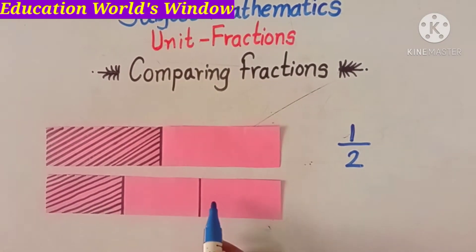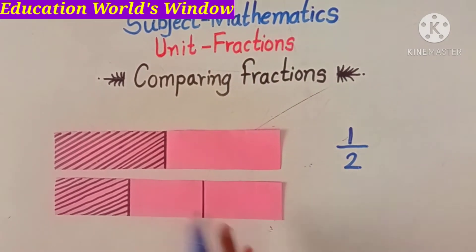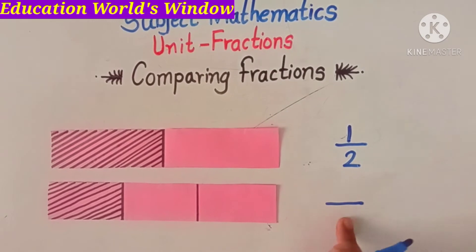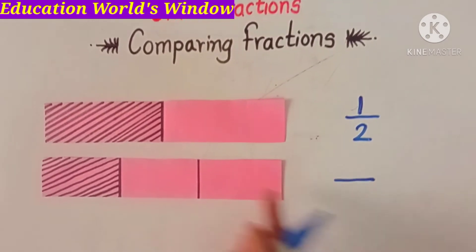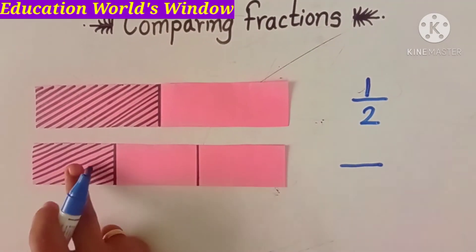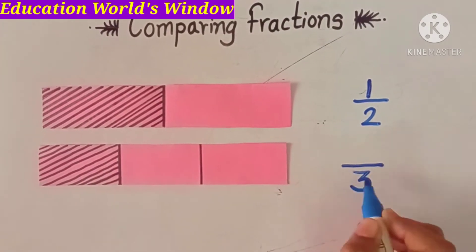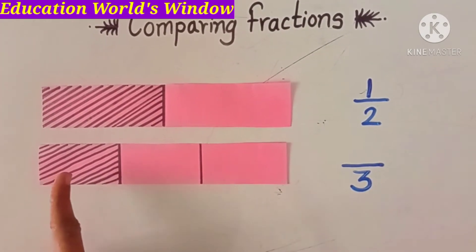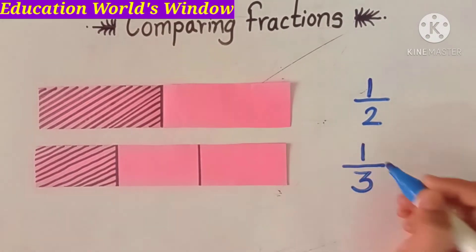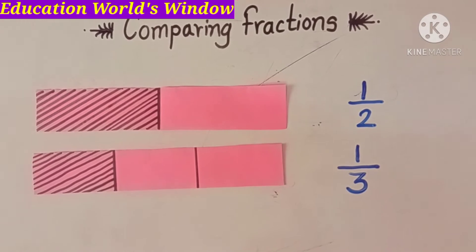This strip is divided into 3 equal parts: 1, 2, 3. The colored part is only 1. So the fraction is 1 upon 3.